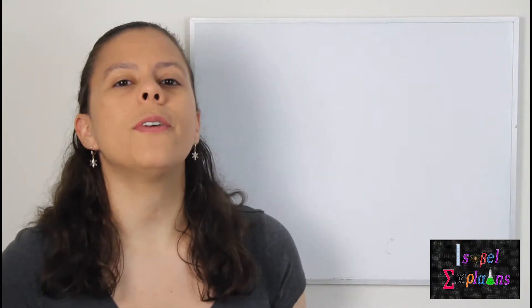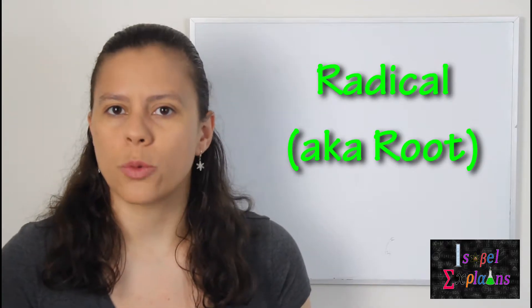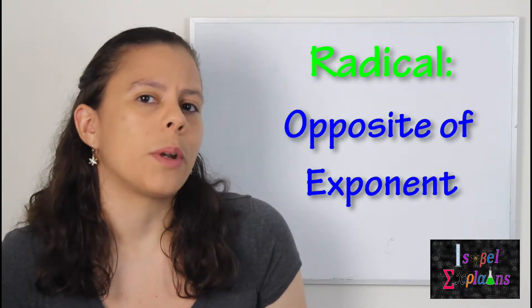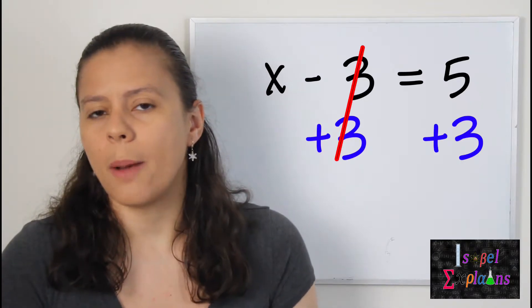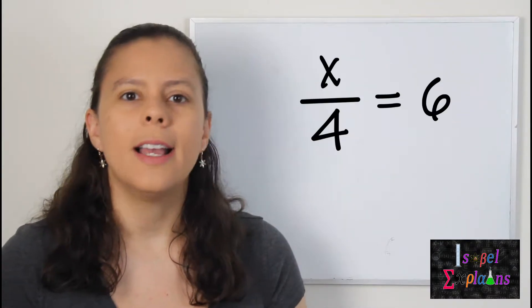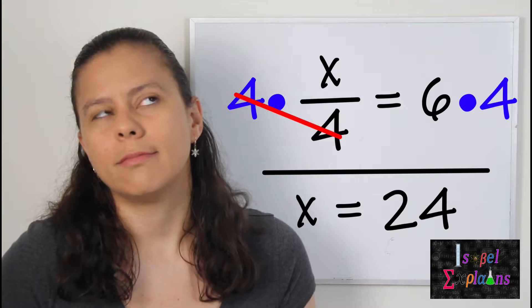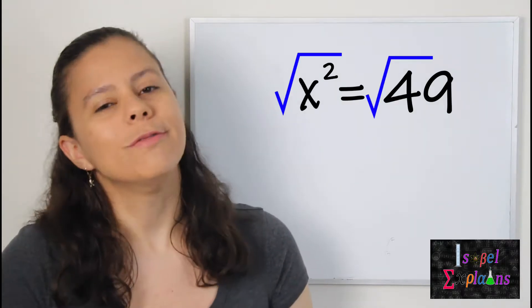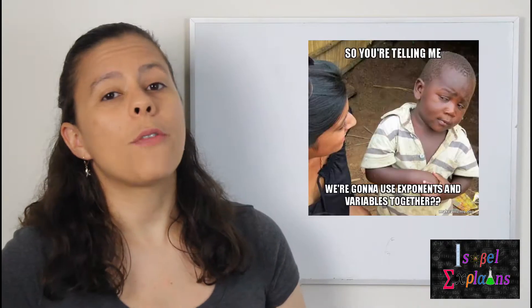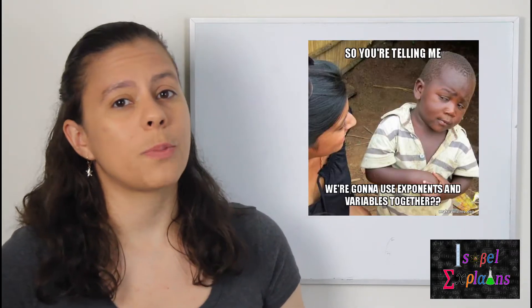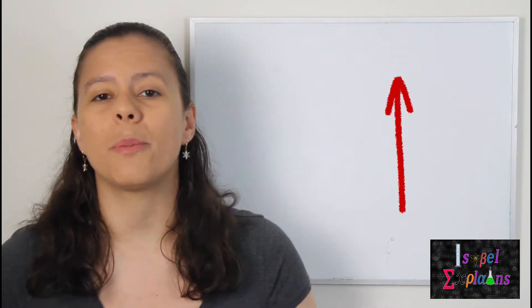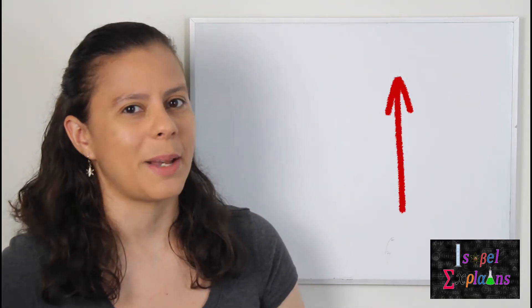Alright, first of all, let's define what is a radical, also known as a root. A radical simply is the opposite of an exponent. I'm sure you know that adding is the opposite of subtracting, and vice versa, and multiplying is the opposite of dividing, and vice versa. Well, what is the opposite of elevating to an exponent? Finding the root. Now, if you're not very confident about using exponents yet, I suggest you first watch the video that I made on how to remember the rules of exponents without memorizing them.